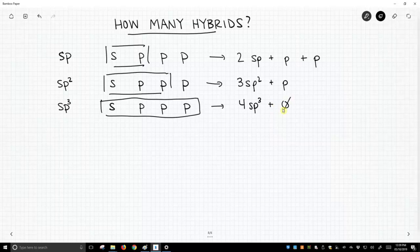Okay, so in all cases we get these four orbitals. I haven't answered the question. How many hybrids do we actually need?